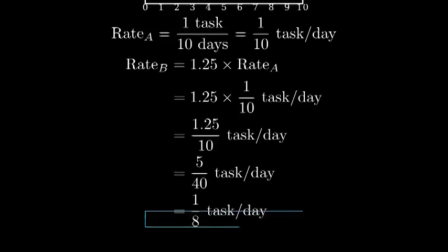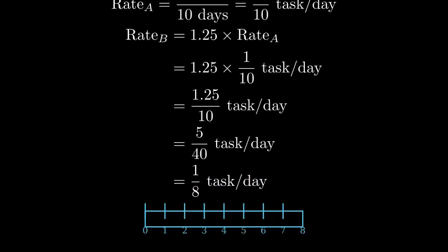Let's visualize B's faster rate. While A completes one-tenth of the task per day, B completes one-eighth of the task per day.